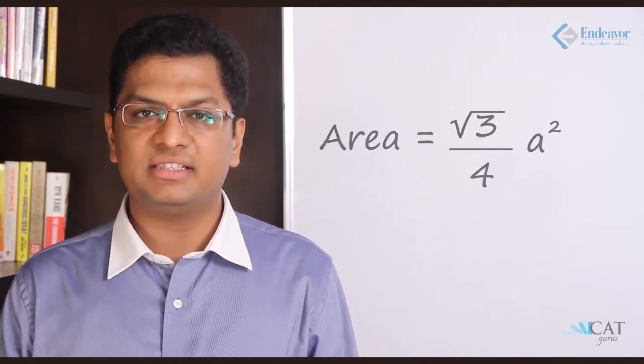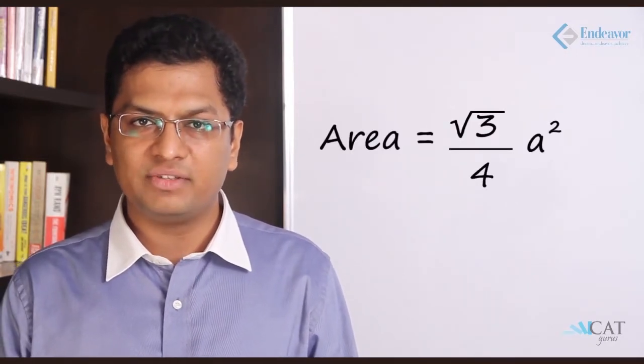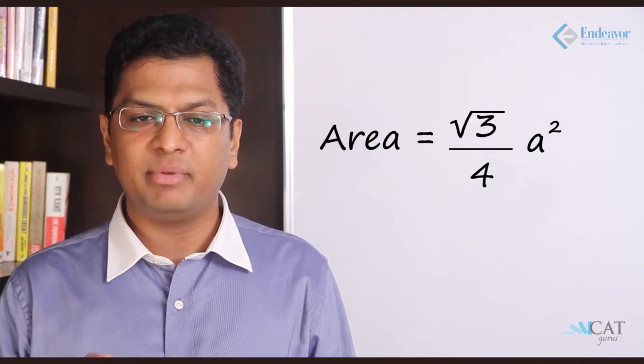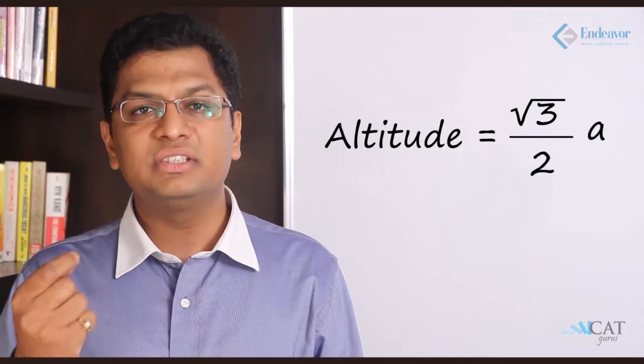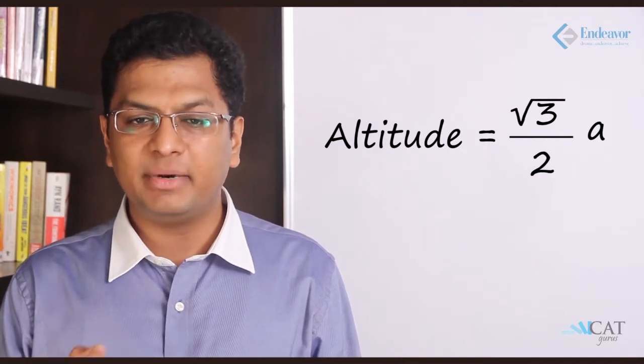Let us take an example of an equilateral triangle. In an equilateral triangle all the sides are equal, so let us assume the side to be A. The area of an equilateral triangle is root 3 times the square of the side divided by 4. The altitude of an equilateral triangle is root 3 times the side divided by 2.